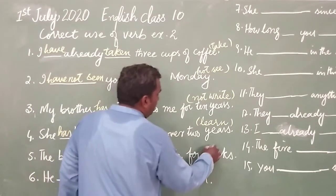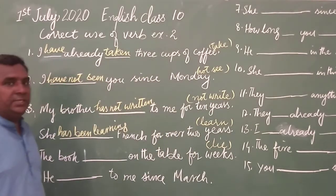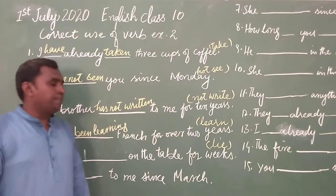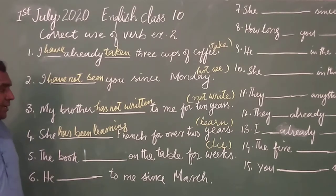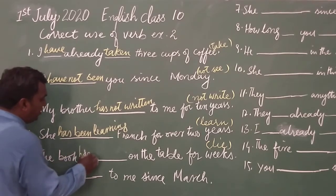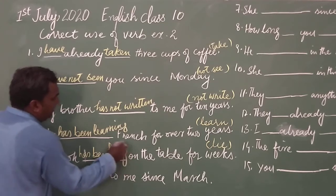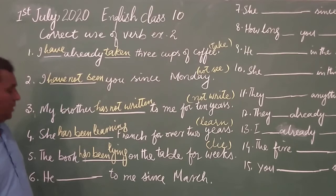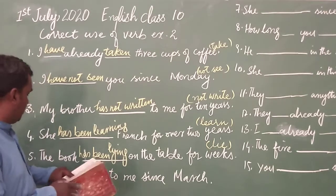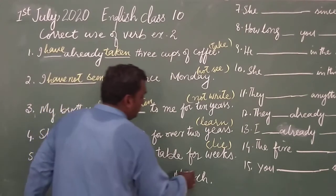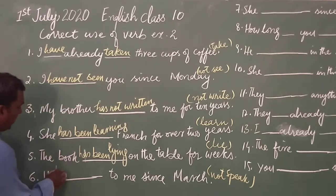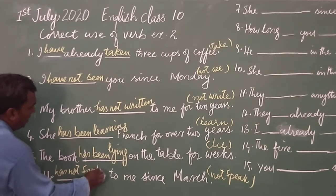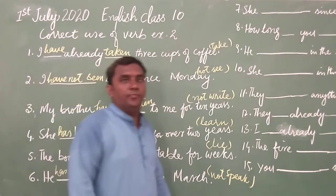Sentence five: 'The book dash on the table for weeks' — here 'lie' (L-I-E), meaning to be lying or placed. The book has been lying on the table for weeks — kitab hapton se mez par padhi rahi hai. In present perfect continuous tense: The book has been lying on the table for weeks. Sentence six: 'He dash to me since March' — answer is: He has not spoken to me since March.